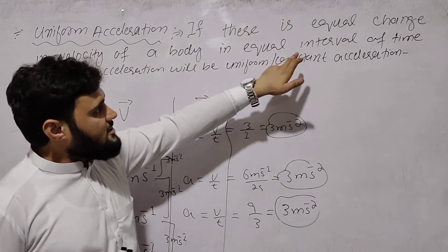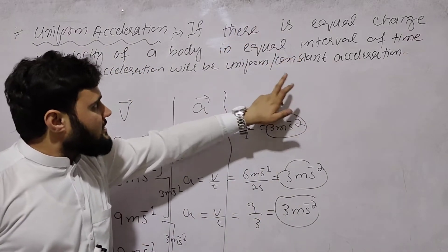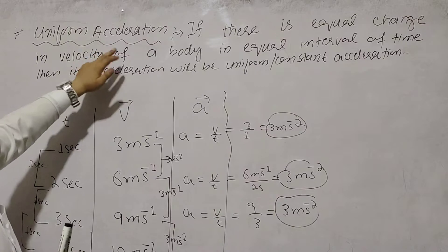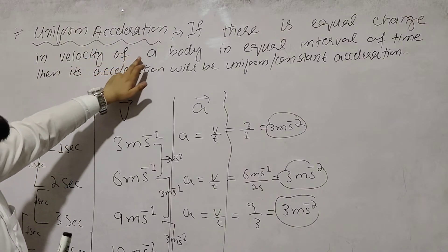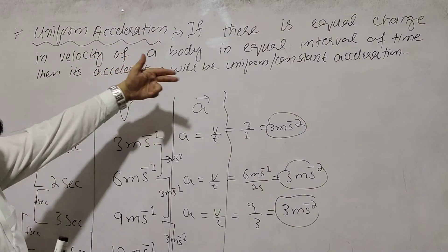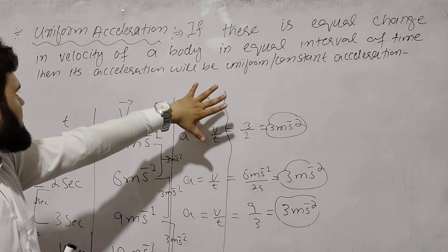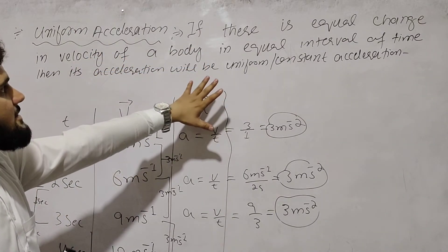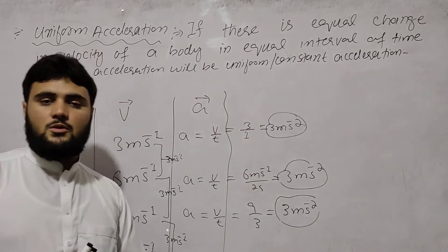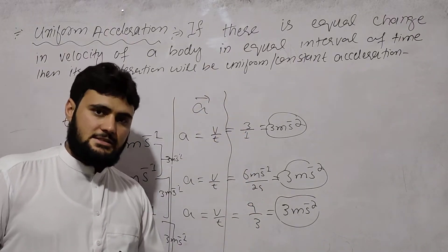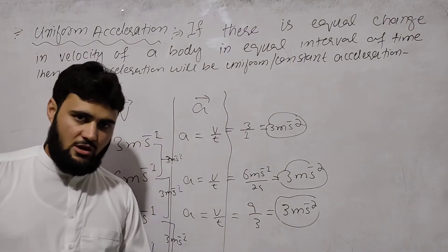So to summarize: if there is equal change in velocity of a body in equal intervals of time, then the acceleration is called uniform acceleration or constant acceleration.